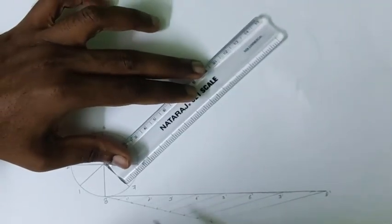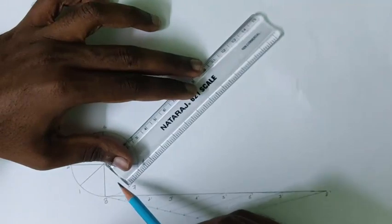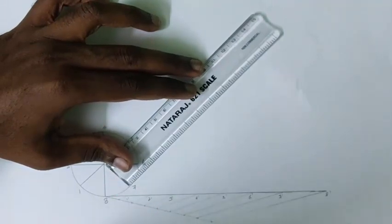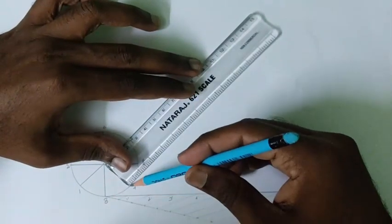Then draw perpendicular lines from all these dividing lines. Now I am taking this line 7, I am drawing a perpendicular line.